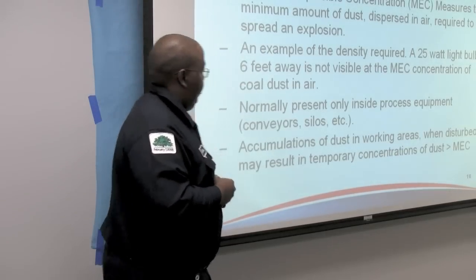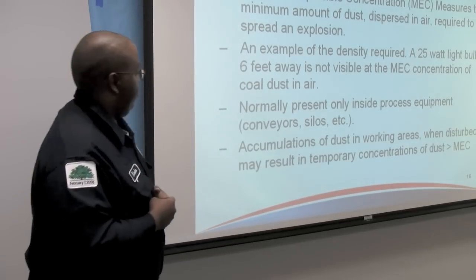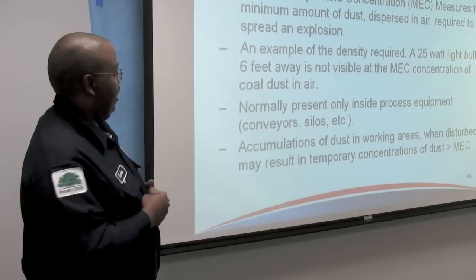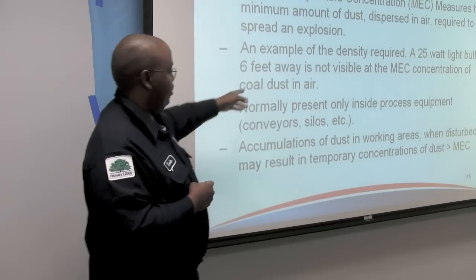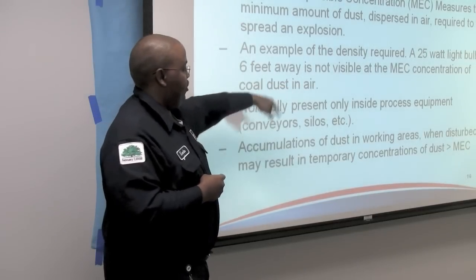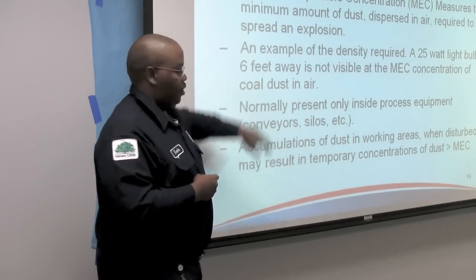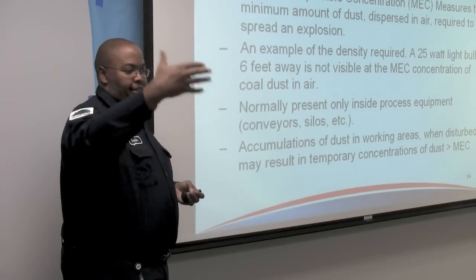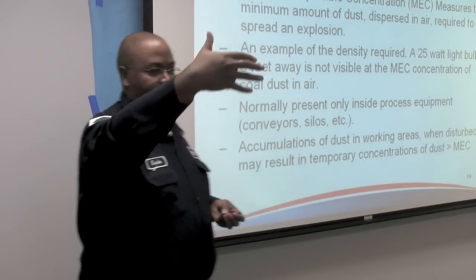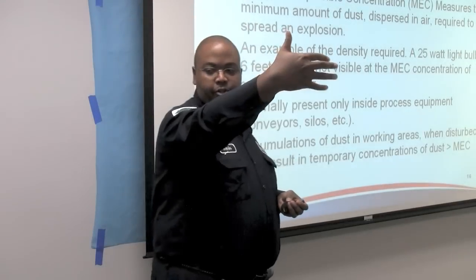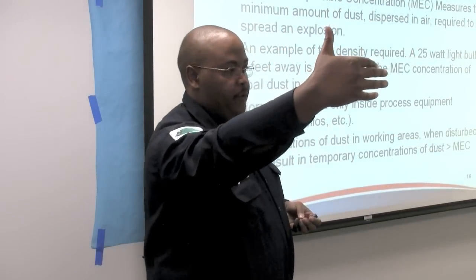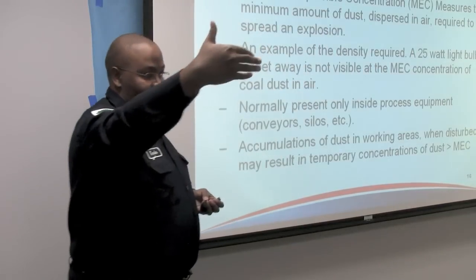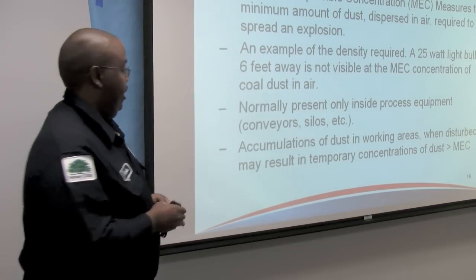Here's an example I've used in training: a 25-watt light bulb six feet away is not visible at the MEC for coal dust. Generally, if you cannot make out the features of your hand at arm's length in front of your face, you are at that minimum explosible concentration.